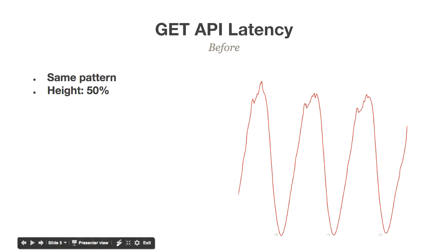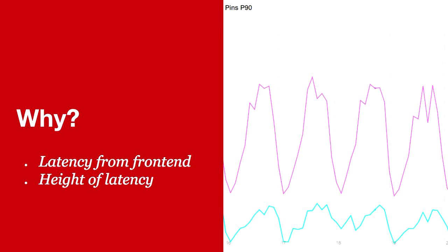We also saw the same pattern across all API endpoints, where the latency fluctuated during the day versus nighttime by about 50% — during the day it was twice as bad as at night. The latency doesn't make any sense, and nobody really knew what was going on.